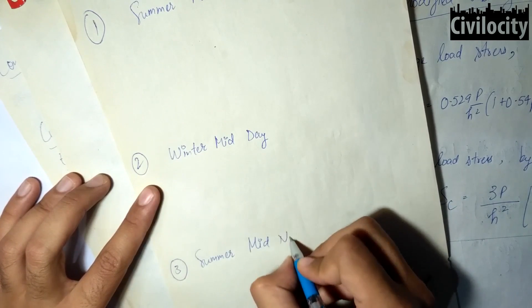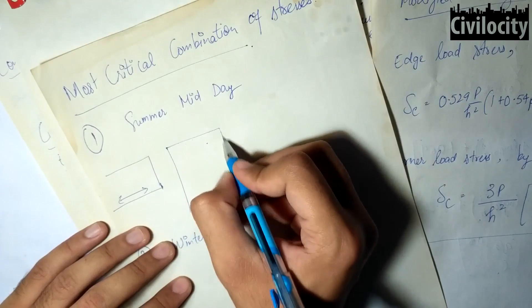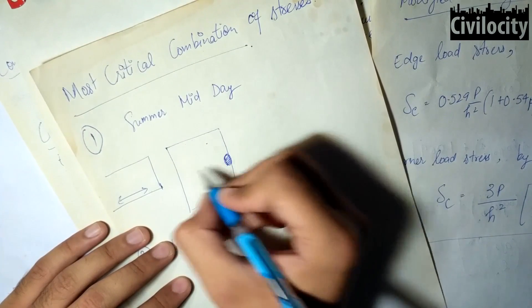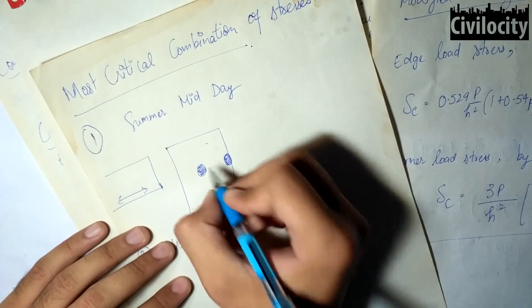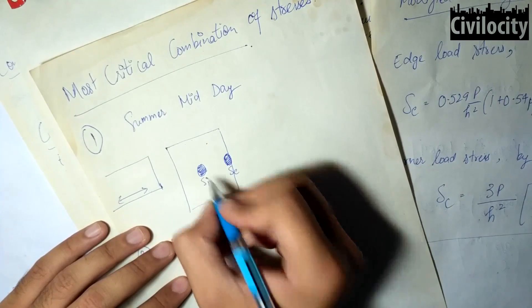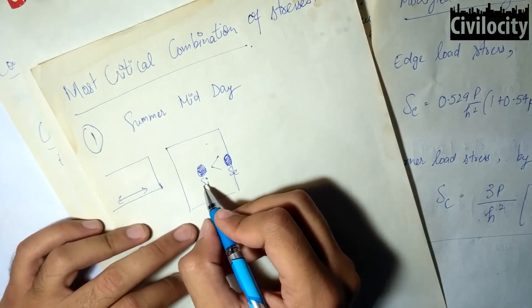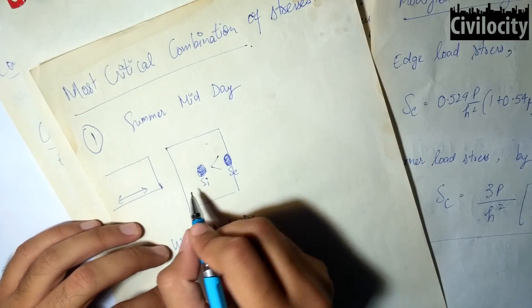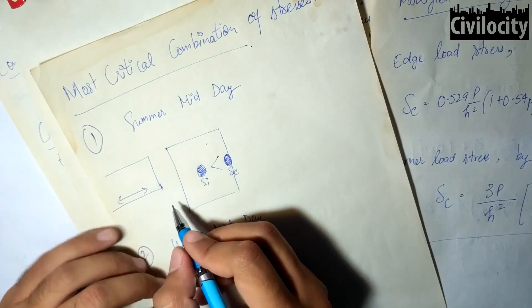During the summer midday, the magnitude of load stress at the edge location of the rigid pavement is much higher than the load stress at the interior. Though the warping stresses at the edge location are lower than the interior, the combination value of load and warping stresses at the edge is generally higher than that at interior.